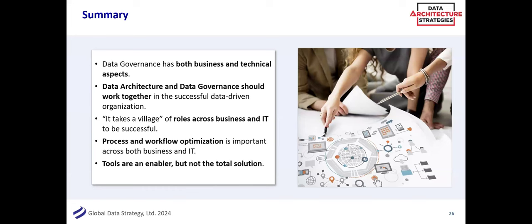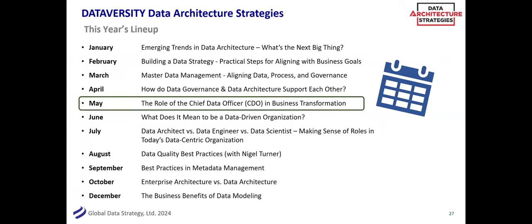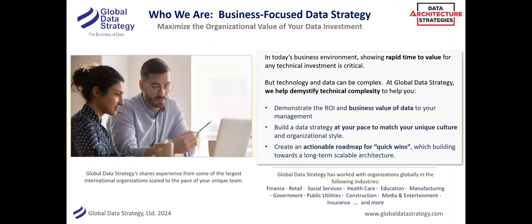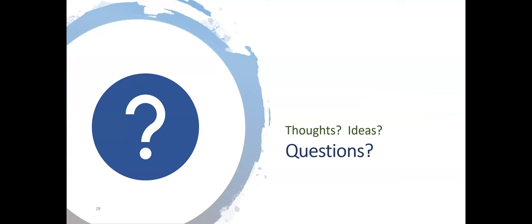In summary: data governance is both business and technical — it's a both-and. Architecture and governance should really work together because it takes a village of roles. Sometimes it's a process or workflow issue, and tools are an enabler — you should definitely have some, but they're not the total solution and I wouldn't recommend starting there. Next month we're going to talk about the Chief Data Officer role and how it can support business transformation. My company does this for a living, so if you need help, don't hesitate to reach out — my email is on the second slide.